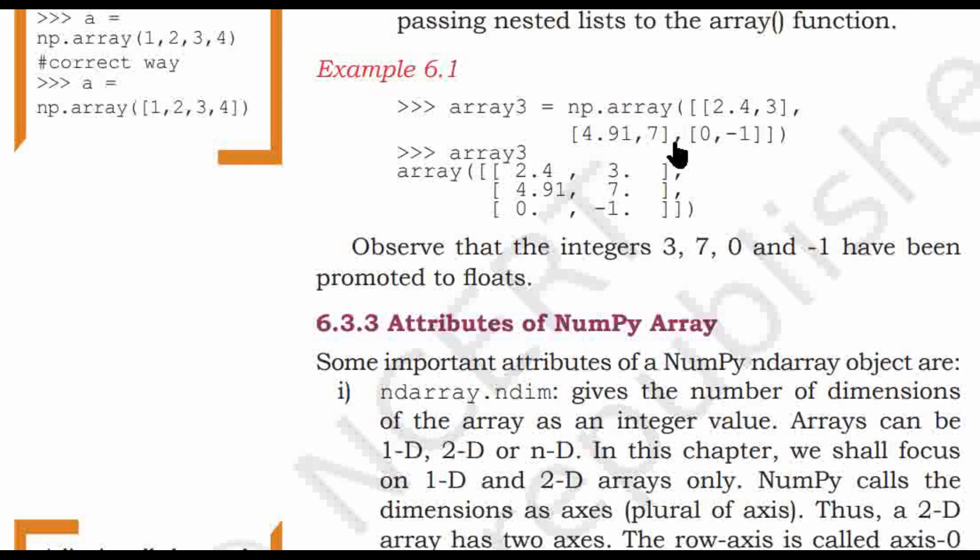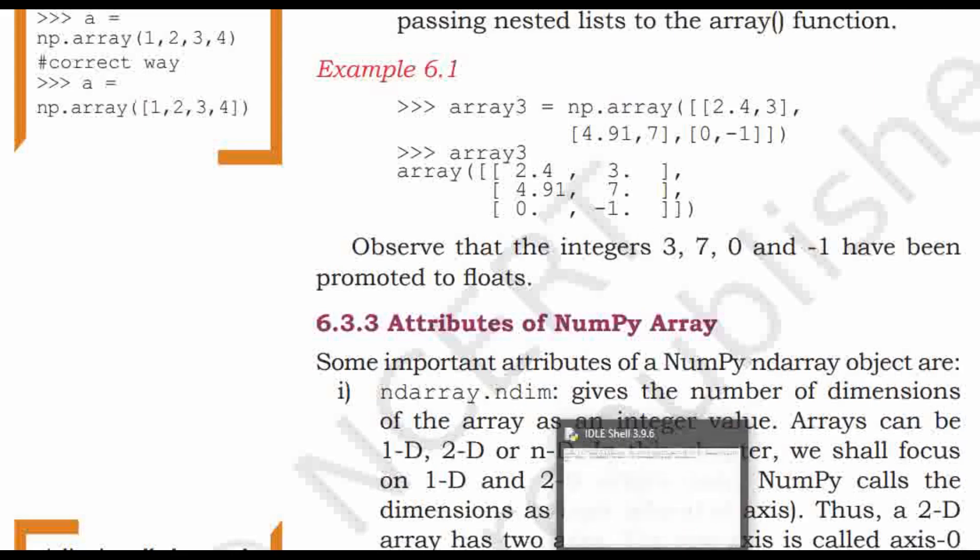These are integers like 3, 7, 0, and -1, but in the output they have been promoted as float. So let's do a practical for this example. We are going to create a two-dimensional array using NumPy. I am going to open IDLE shell.